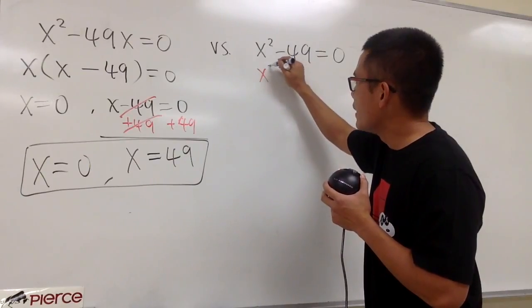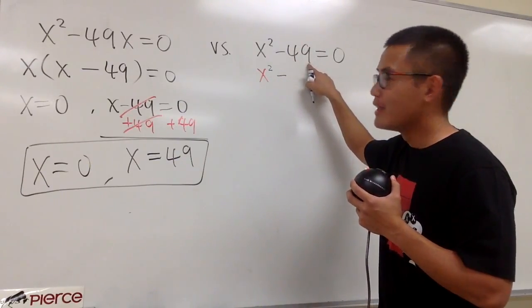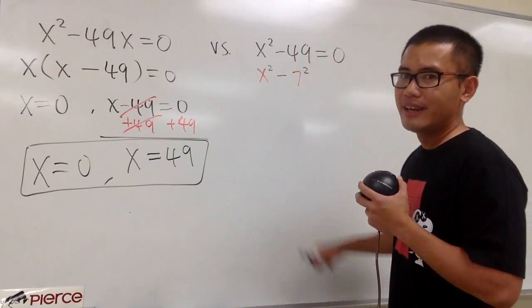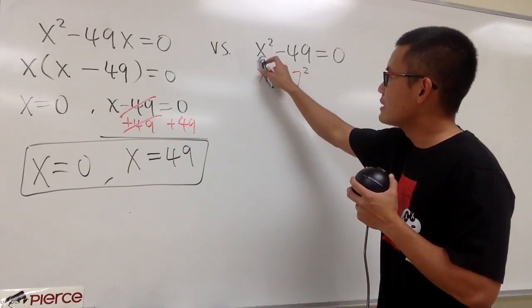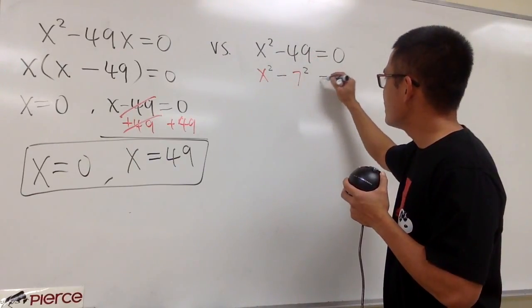Look at this as x squared and then minus, for the 49, you have to look at this as 7 squared. There was no common factor, but it was a difference of two squares. So, put this down right here and make it equal to 0.